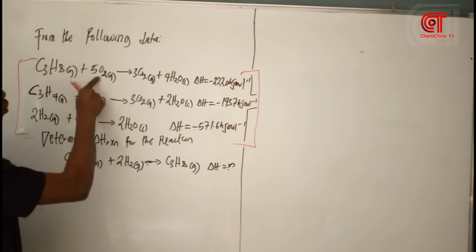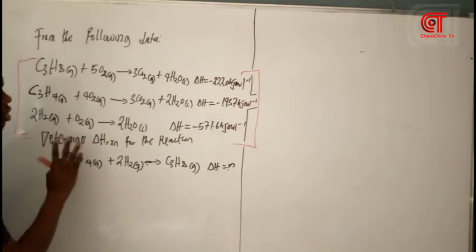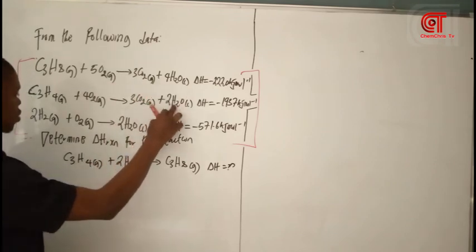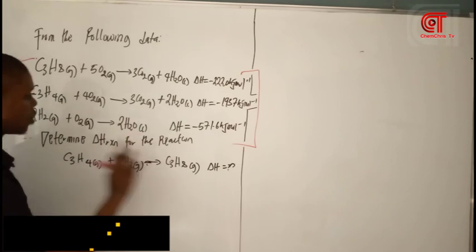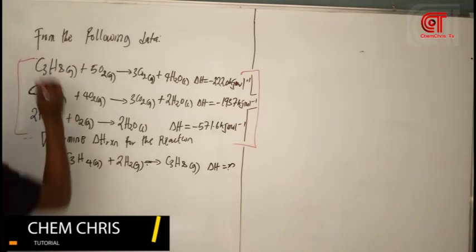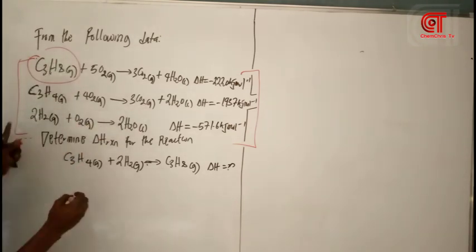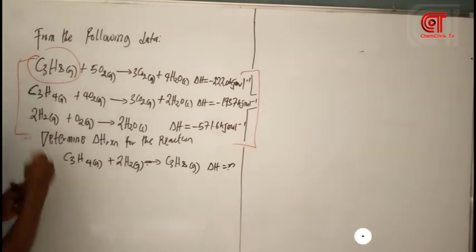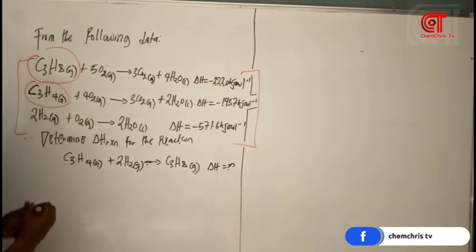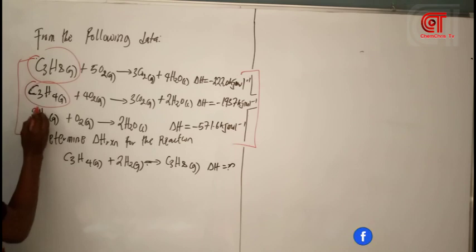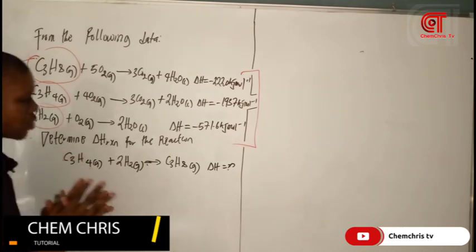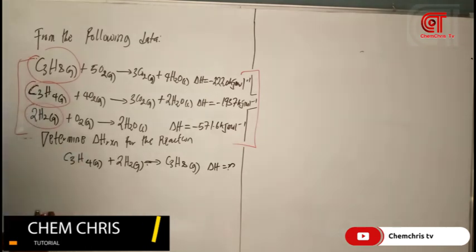O2 is present in multiple equations, so we are not going to circle it. CO2 is here and here, so we are not going to circle it. H2 is here, here, and here — we leave it. C3H8 is only unique to a particular reaction because you cannot see C3H8 in the other equations. Similarly, C3H4 is unique to a particular reaction. So those are what we circle in the first step.